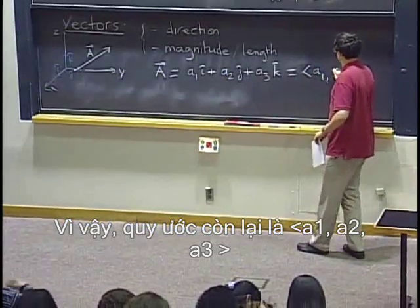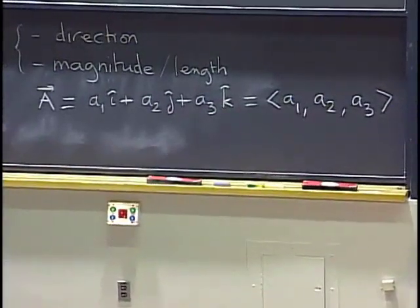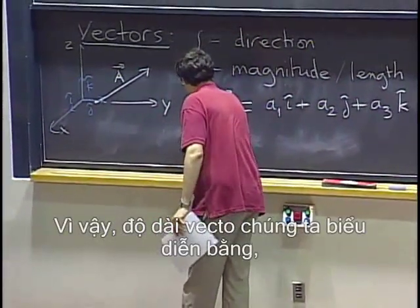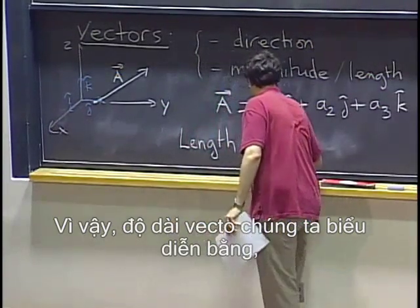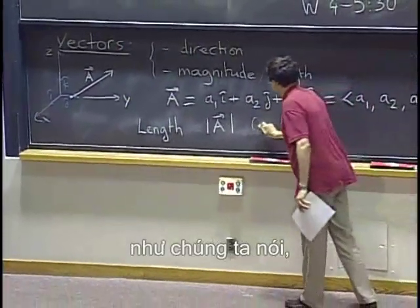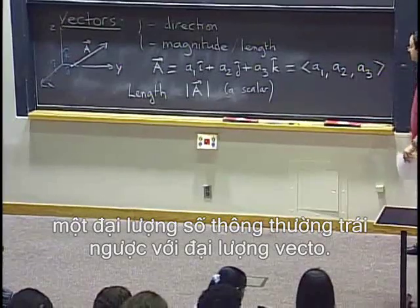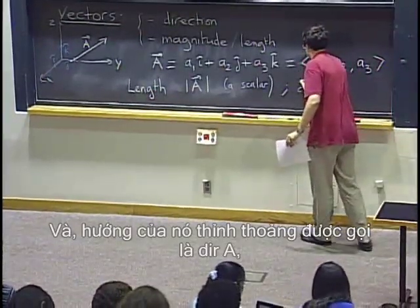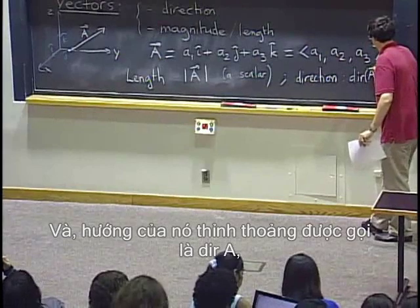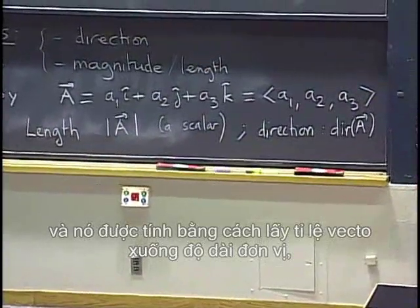The other notation is angle brackets a1, a2, a3. The length of a vector we denote by the same notation as absolute value — that is going to be a number, or as we say, a scalar quantity. A scalar quantity is a usual numerical quantity as opposed to a vector quantity. Its direction is sometimes called the unit vector of a, and that can be obtained just by scaling the vector down to unit length, for example by dividing it by its length.